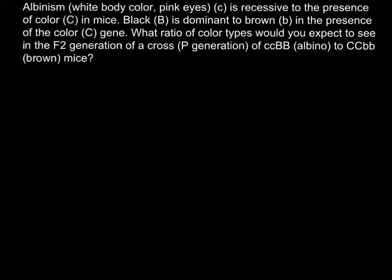In order to solve this problem, we just have to start step by step. The first step is the parent generation. We have two mice: one is albino — small c small c capital B capital B — and we have to cross it with brown mice, that is capital C capital C small b small b.